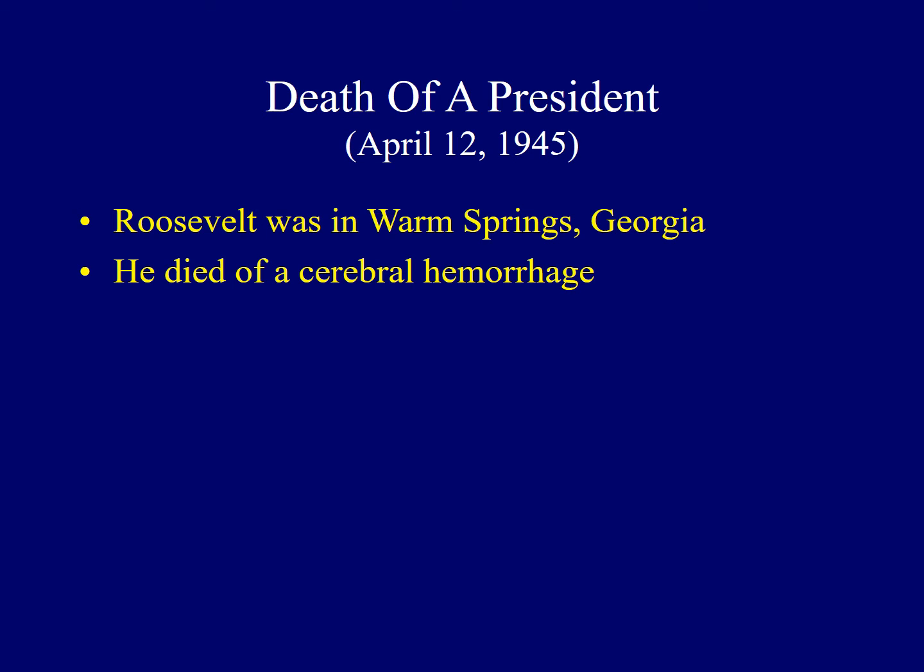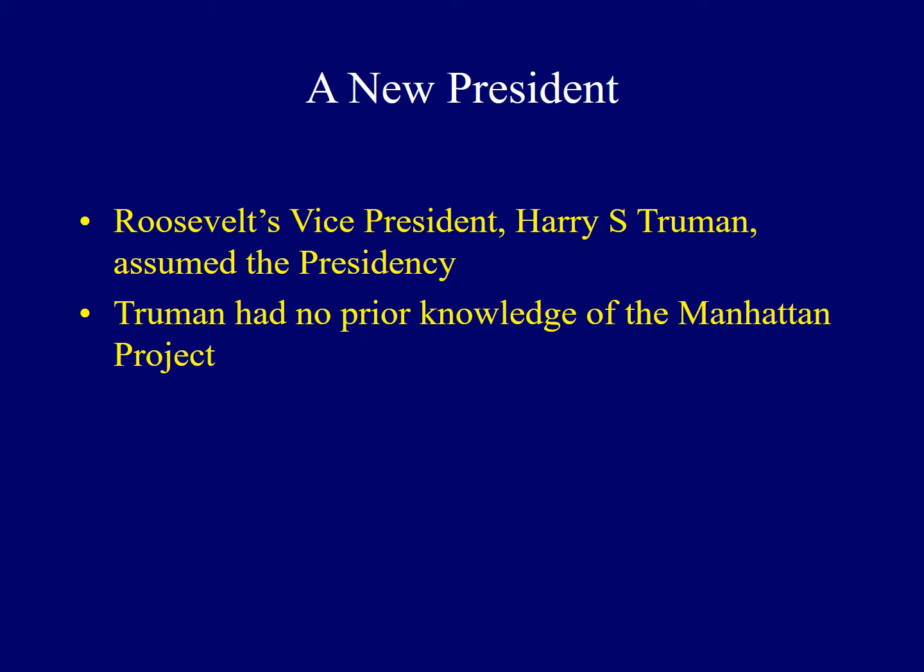In April of 1945, Roosevelt was having his portrait painted in Warm Springs, Georgia, when he clutched his head complaining of a terrible headache. He had suffered a cerebral hemorrhage and died later that day. Following his death, Vice President Harry Truman took over the presidency. Truman was a former senator from Missouri whom many didn't know well, as he had only served as vice president for a short time. Roosevelt and Truman had not developed a close working relationship, and Truman had no prior knowledge of the Manhattan Project.